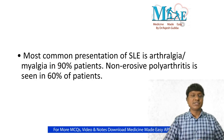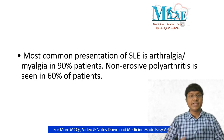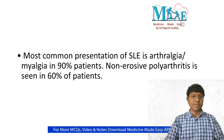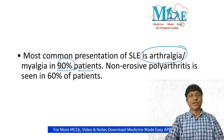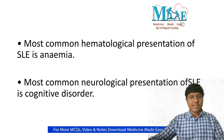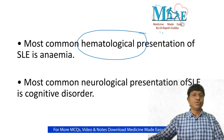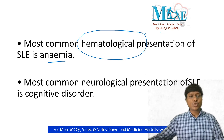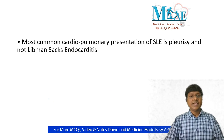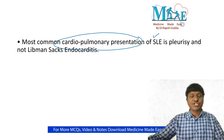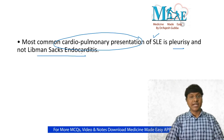Some important MCQs related to SLE: the most common presentation of SLE is not the malar rash — it is arthralgia or myalgia, present in almost 90% of patients. The type of arthritis is non-erosive, seen in almost 60% of individuals. The most common hematological presentation is normocytic normochromic anemia. The most common neurological complication is cognitive disorder. The most common cardiopulmonary presentation is pleurisy, not Libman-Sacks endocarditis.